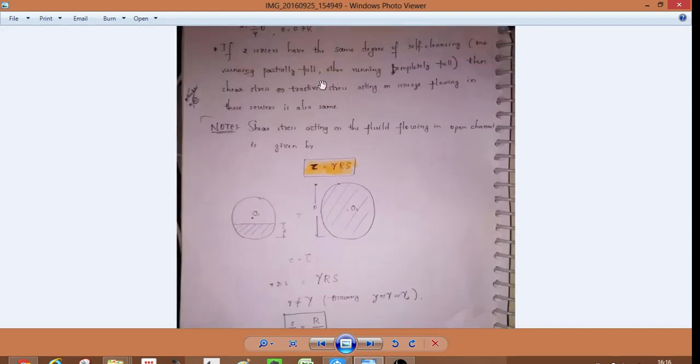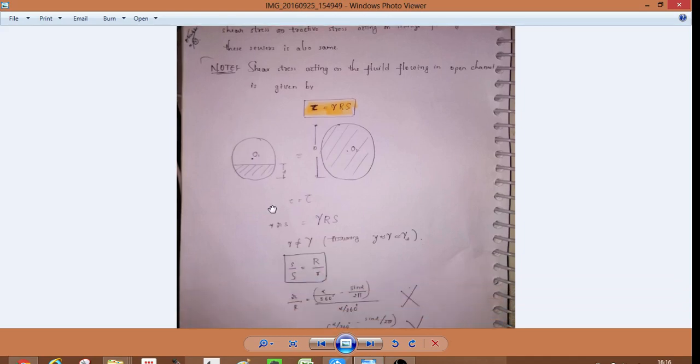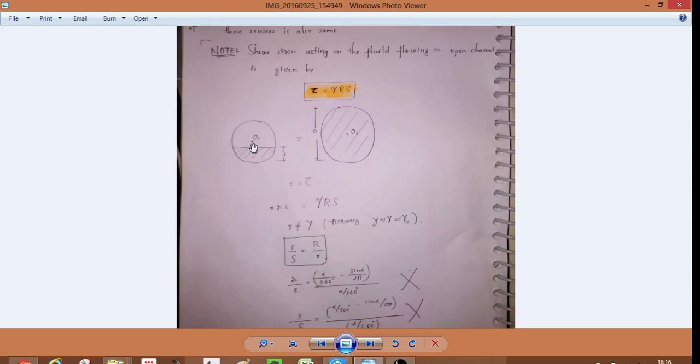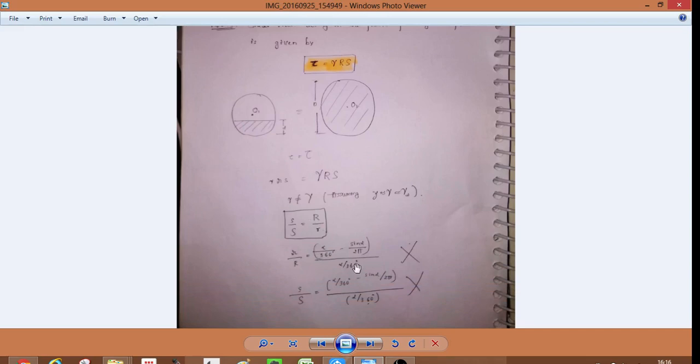If two sewers have same degree of self-cleansing, one running partially full and other running completely full, then shear stress or drag force acting on sewage flowing in these sewers is also the same. Shear stress acting on fluid flowing in open channel is given by tau equals gamma RS.